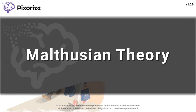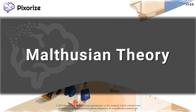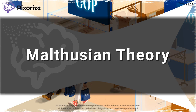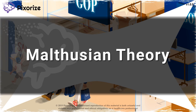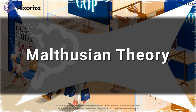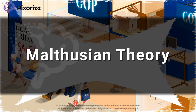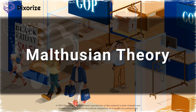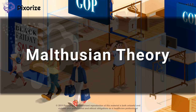Malthusian theory states that a population of people will grow much faster than the food supply needed to feed and sustain it. It is a theory of demographic change, which attempts to explain changes in the composition or distribution of a population. Specifically, Malthusian theory focuses on the relationship between population change and resources.